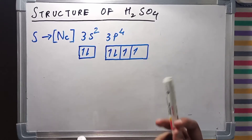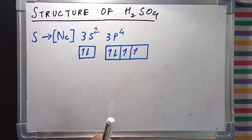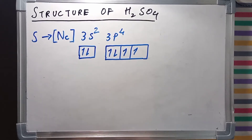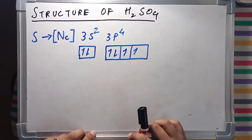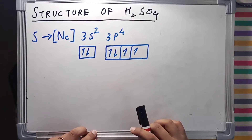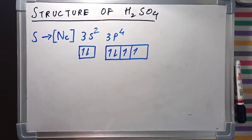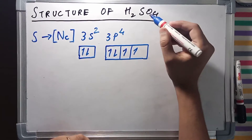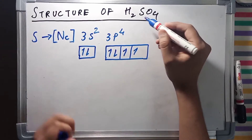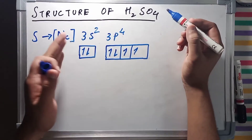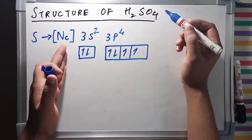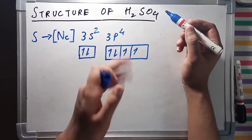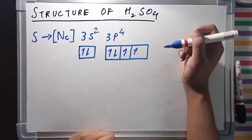We want to draw the structure of H2SO4. We are going to draw the structure of this particular molecule by Lewis dot structure method. The electronic configuration of sulfur, the central atom in H2SO4, is the inert configuration of neon and then 3S2 and then 3P4.